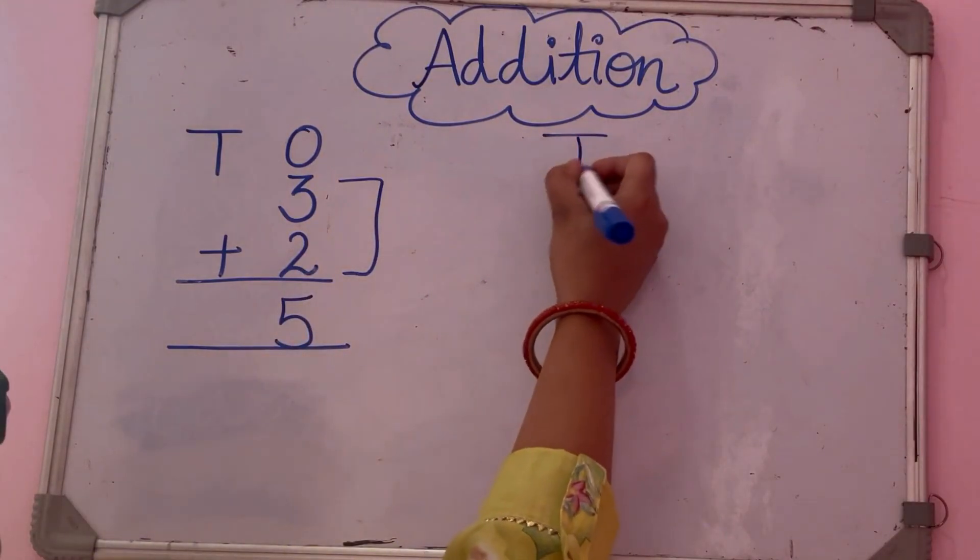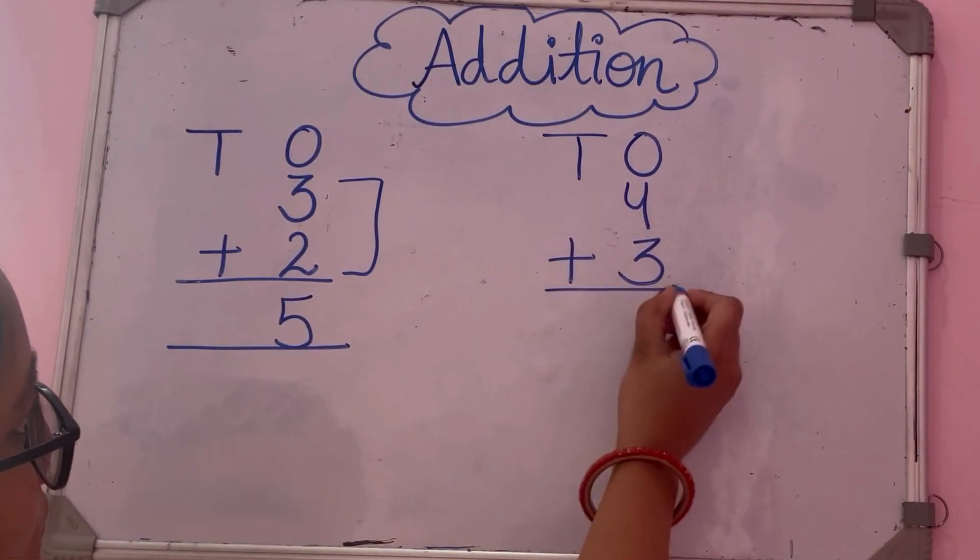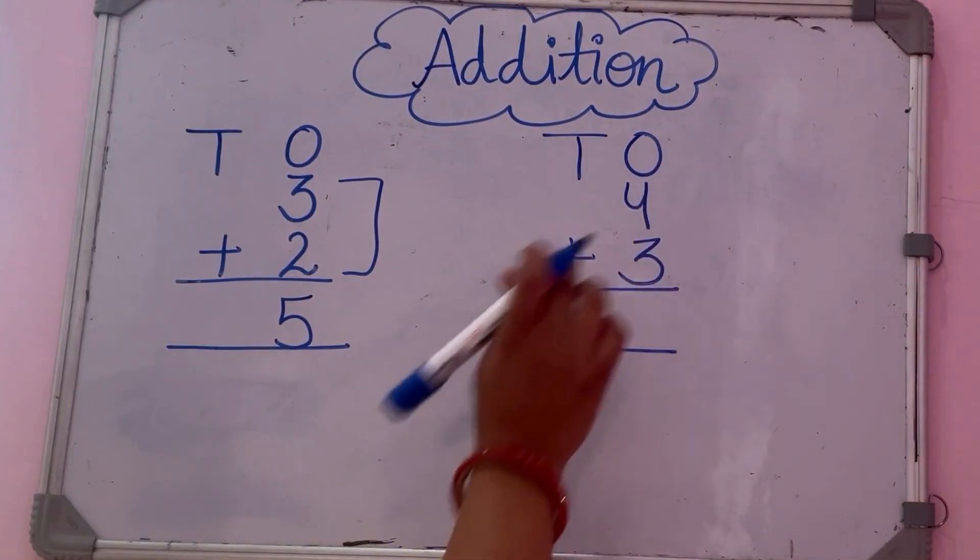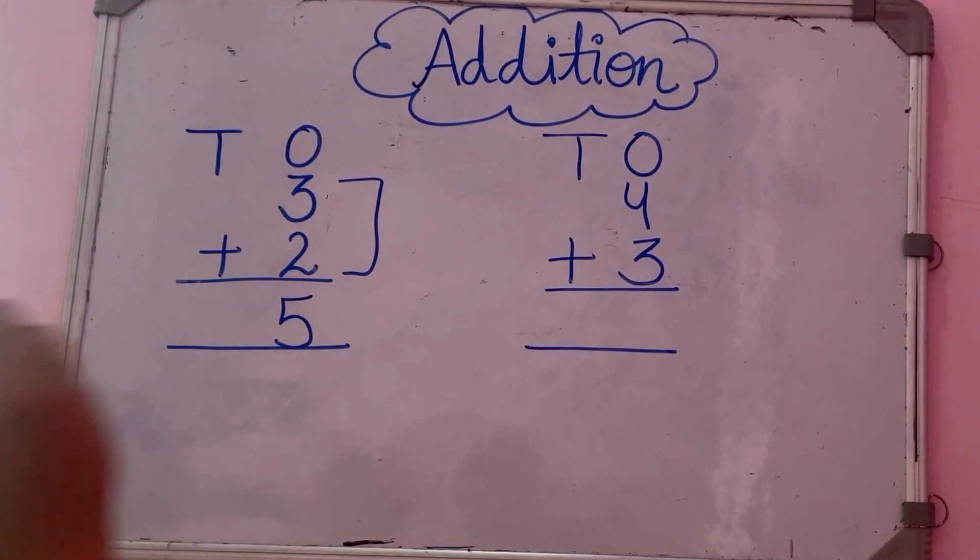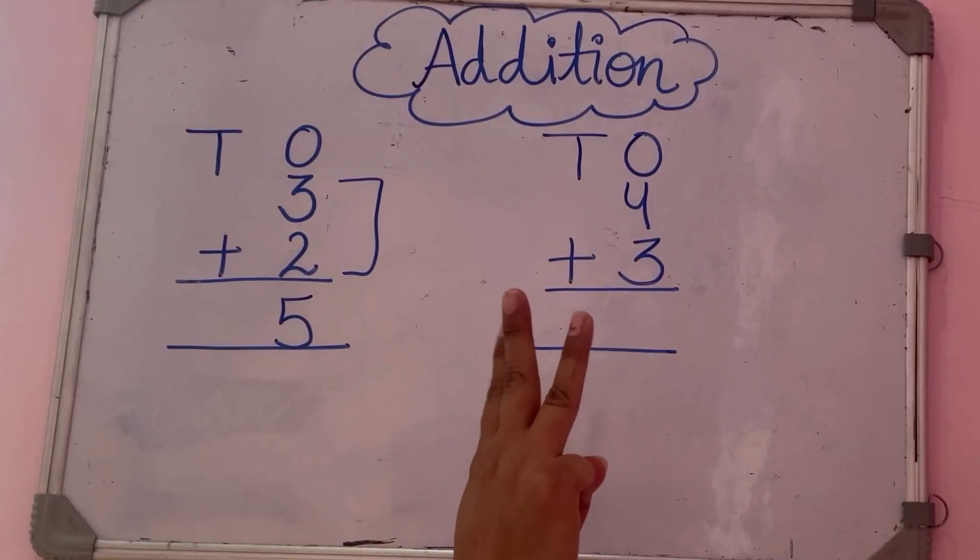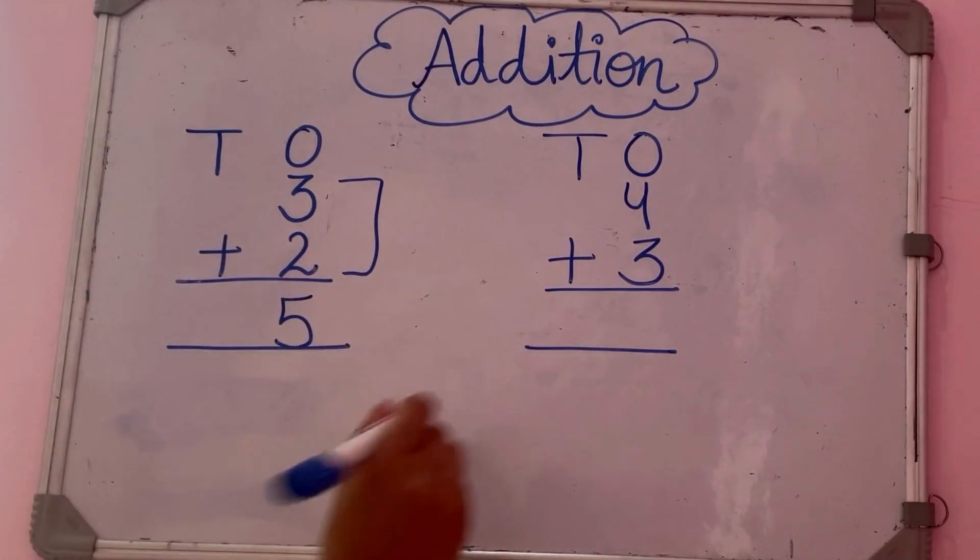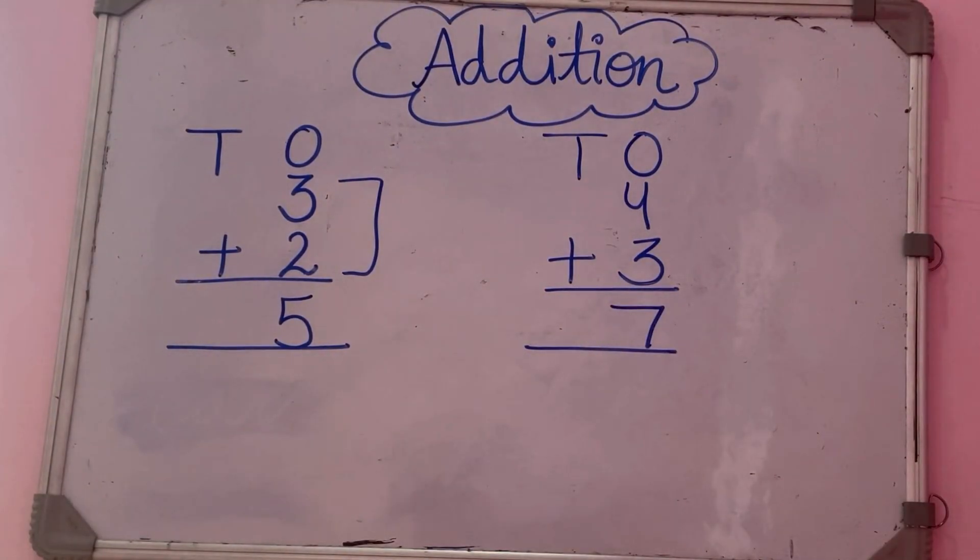Next: 4 plus 3. Number 4, we put in your mind. And number 3, we put on your fingers. After 4, we count: 5, 6, 7. Number 7 is your answer.